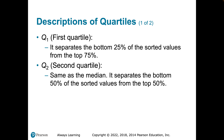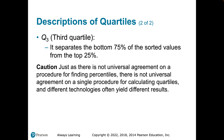The first quartile is the first cut. With our data arranged from low to high, it provides a location for the separation of the bottom 25% and the top 75%. The second quartile is the same as the median — it separates the data into two equal pieces, the top 50% and the bottom 50%. And the third quartile separates the bottom 75% of the sorted values from the top 25%.